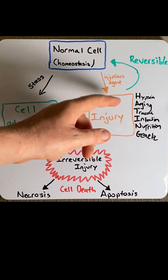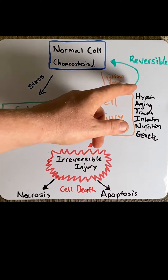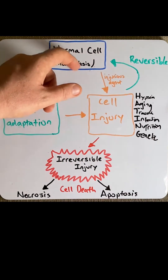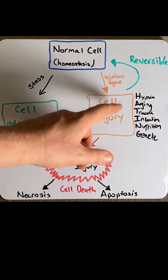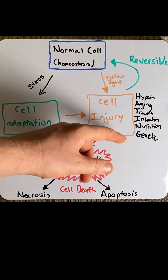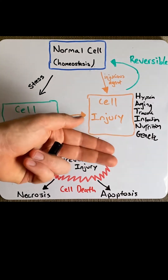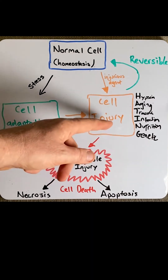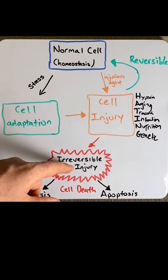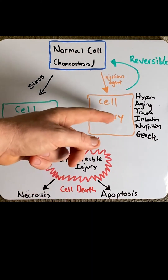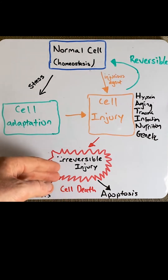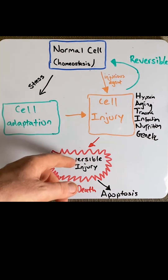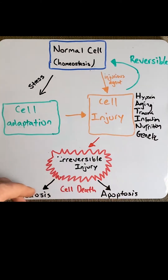If these agents are removed, the cell injury can be reversible and the cell can go back to a normal homeostasis. However, if these agents are prolonged or very severe, it can lead to an irreversible injury, and this is where disease will ensue. The two types of irreversible injury are apoptosis and necrosis.